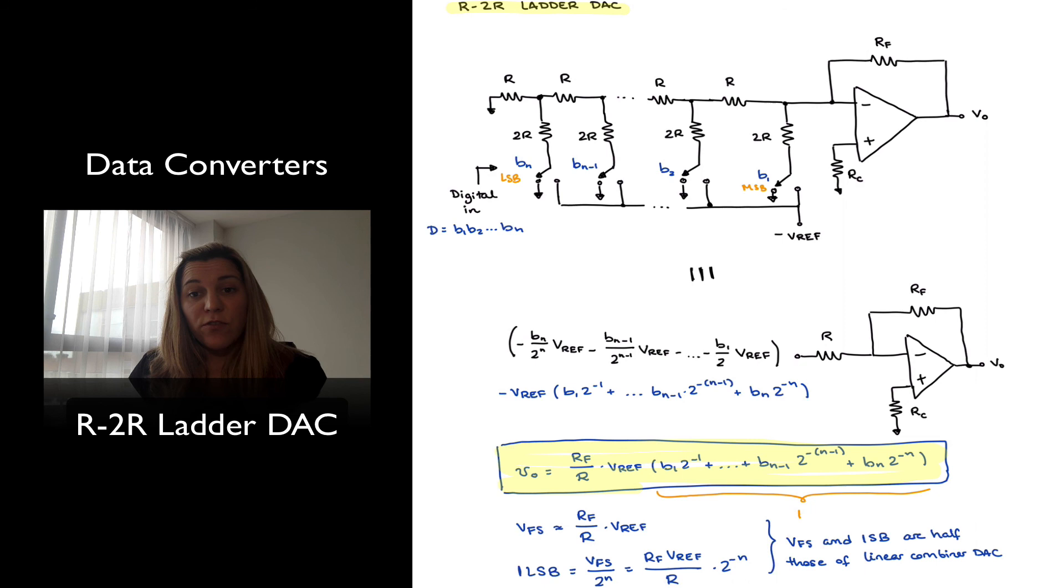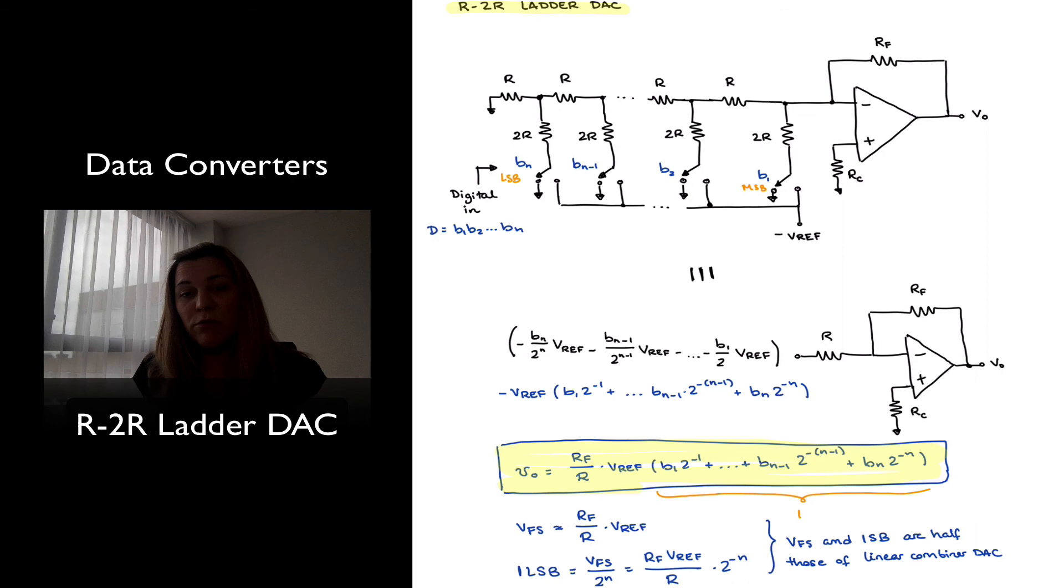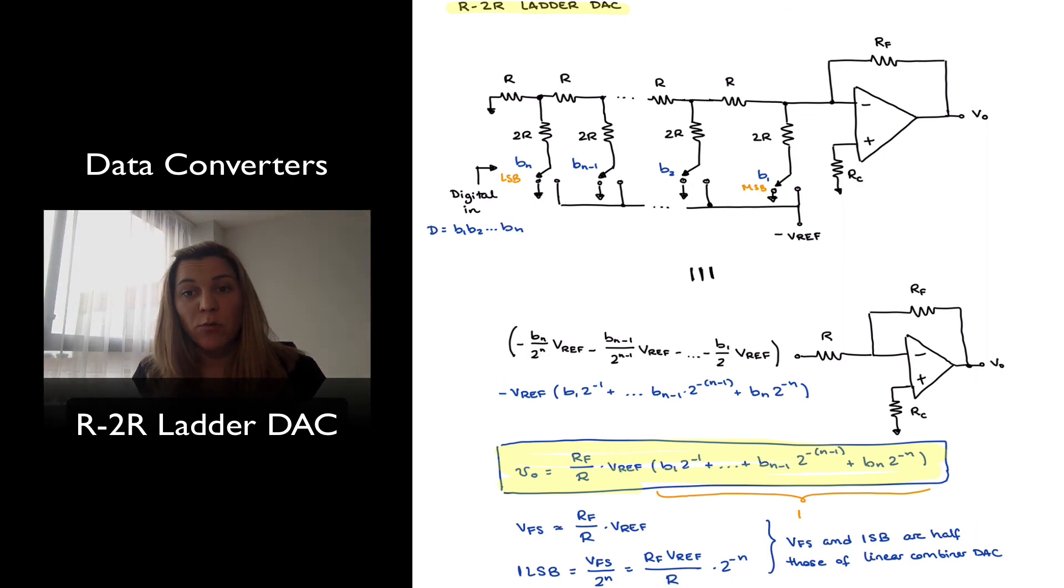The advantages of this circuit with respect to the linear combiner is that it avoids the large resistance spread. Notice that all my resistors are going to be R or 2R, and so especially as my number of bits becomes larger, that becomes an important advantage, but also there are more resistors needed than with the standard linear combiner DAC.